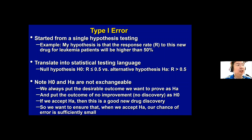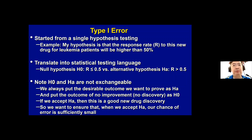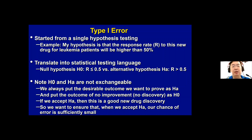We need to note that the two hypotheses are not exchangeable. We always put our desired outcome — what we want to prove — as the alternative hypothesis. We always put the outcome of no improvement, no discovery, as the null hypothesis H0. If we accept the alternative hypothesis, that's very good news — it's a new drug discovery. So we want to ensure that when we claim a discovery, our chance of making a mistake is sufficiently small.